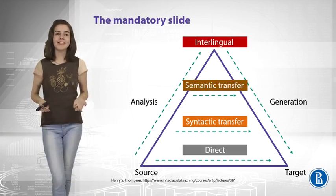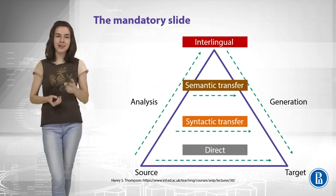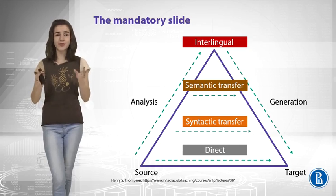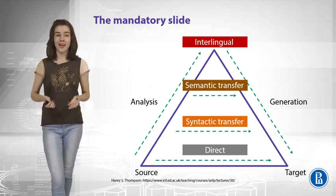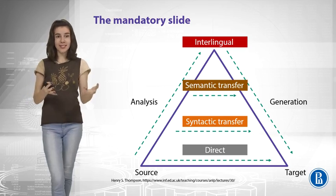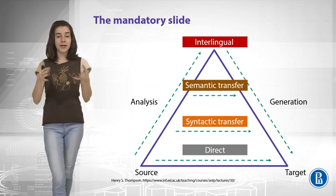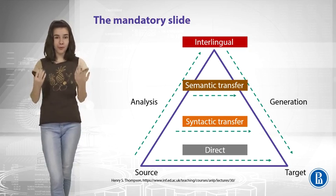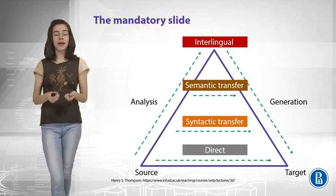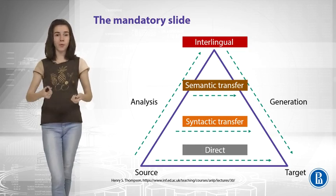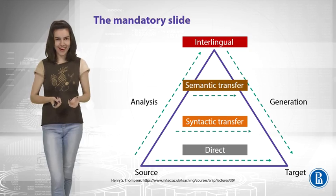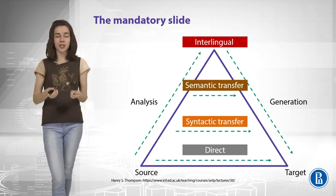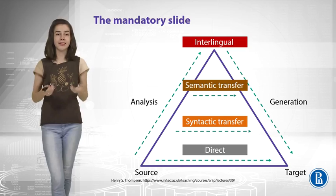Now let us talk about how the machine translation system actually works. This is a classic slide in any machine translation tutorial. The idea is: we have a source sentence and we want to produce a target sentence. The first approach is direct transfer — translating word by word. But that is not very good, as anyone who has studied a foreign language knows: dictionary word-for-word translation usually does not produce coherent output.